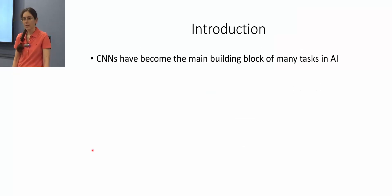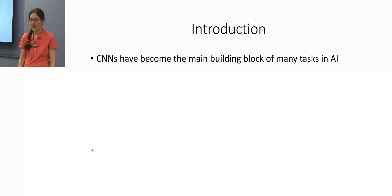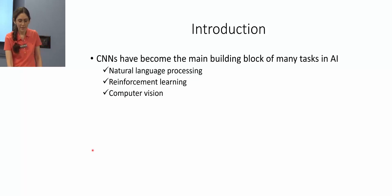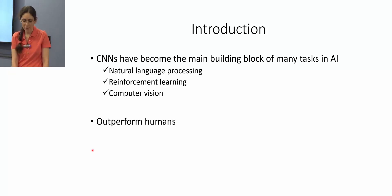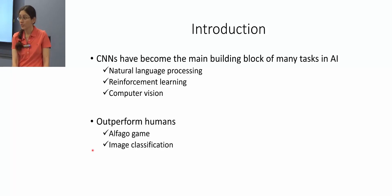Convolutional neural networks have become the main building block of many tasks in AI, like natural language processing, reinforcement learning, and computer vision. In some of those tasks they outperform humans, like AlphaGo and specifically image classification tasks.